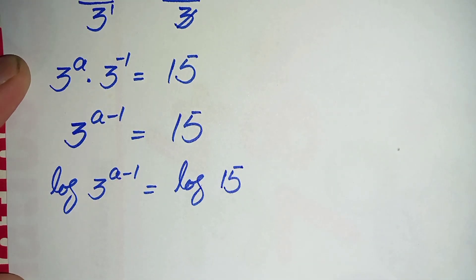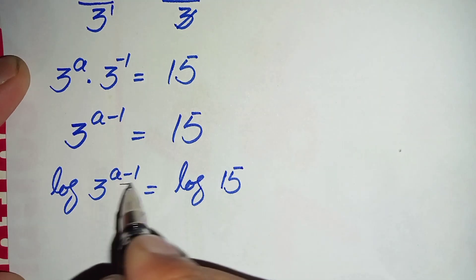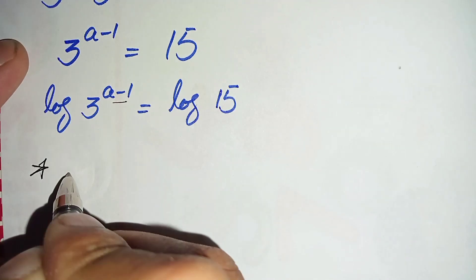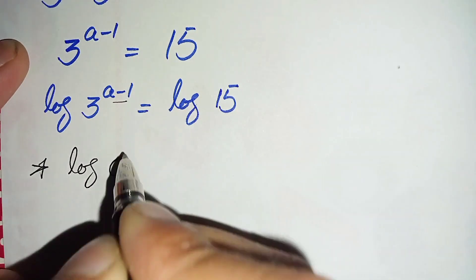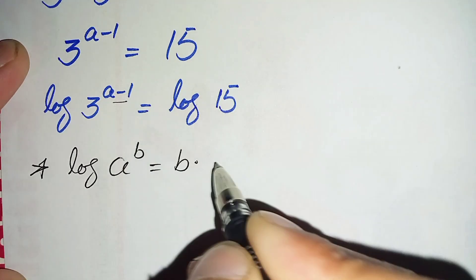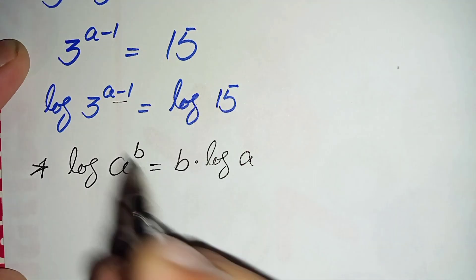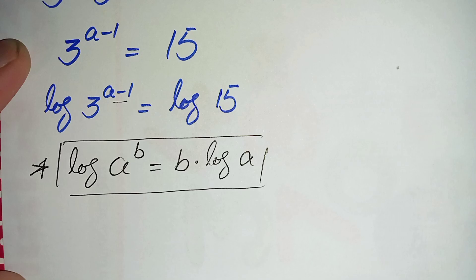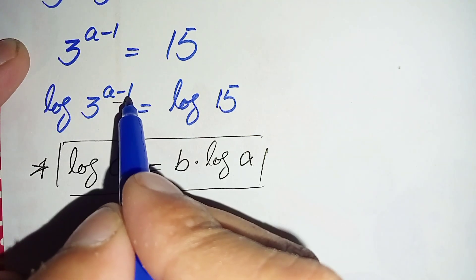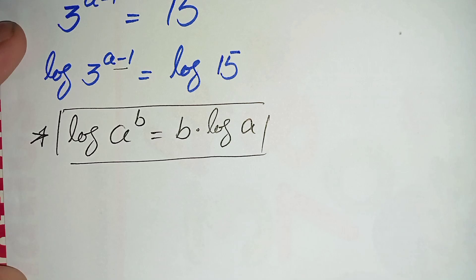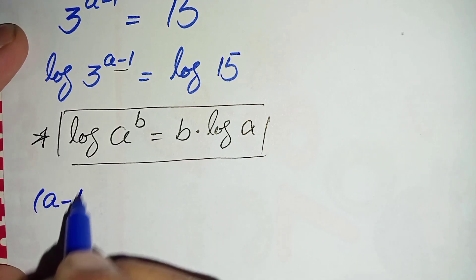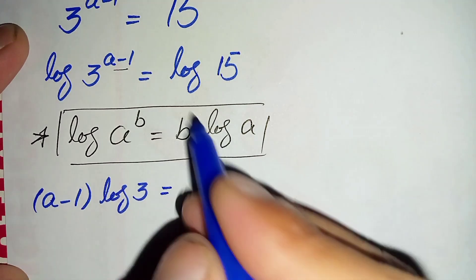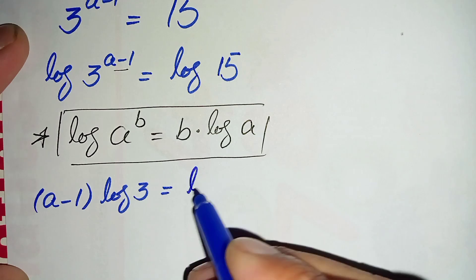On the left hand side we will use the log power property: log of a to the power b can also be written as b times log of a. Using this property, we move (a minus 1) to the front of the log, so this becomes (a minus 1) times log of 3 is equal to log of 15. We will now factorize 15 as the product of 3 times 5.